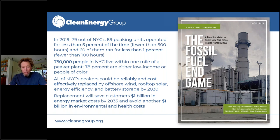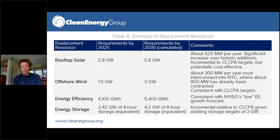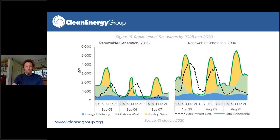That replacement would save customers a billion dollars in energy market costs by 2035 and avoid another billion dollars in environmental and health costs. The resource development targets include 5.6 gigawatts of rooftop solar by 2030, three gigawatts of wind, 5,400 gigawatt-hours of energy efficiency, and about four gigawatts of eight-hour duration energy storage. These are big numbers, but all well within the targets the state of New York has established. Some of these targets are actually outdated — the state now has a six-gigawatt energy storage goal and a ten-gigawatt solar goal.